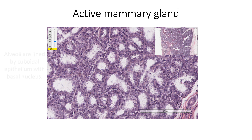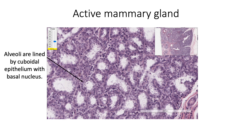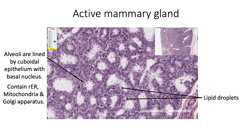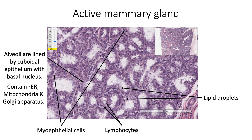The alveoli are lined by cuboidal epithelium with a basal nucleus. These cells show rough endoplasmic reticulum, mitochondria, and supranuclear Golgi apparatus. As we come towards the later stages of pregnancy, these cells will also show presence of lipid droplets. Underlying the basal lamina, we find numerous myoepithelial cells which are stellate in shape and contract in response to oxytocin, helping in milk expression. Between the alveolar cells, we also find a few lymphocytes.